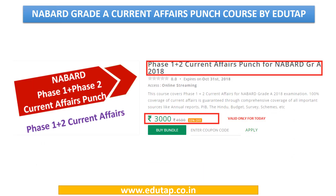Before we proceed today, there is an important announcement. EduTab has brought out the NABARD grade A current affairs punch course. It covers the current affairs related to phase 1 and phase 2. Today is the last day to avail the discount on this course. The original MRP of this course is Rs. 4,500. Currently, we are running a 33% off, so you will be getting this course for Rs. 3,000. There is no need to apply any coupon code — you can directly go and buy this course from our portal. Today till midnight, you can get this course for Rs. 3,000; after that, the price will be back to its MRP.